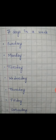So today, what do you have to do? First of all, you have to learn the days of the week. How many days are there in a week? There are 7 days in a week: Sunday, Monday, Tuesday, Wednesday, Thursday, Friday, Saturday. So you have to learn the spelling of all the 7 days of the week.